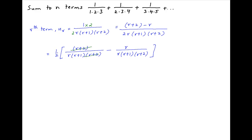r plus 2 cancels across the numerator and denominator in the first term, and r cancels in the second term. Therefore ur is equal to half of, in brackets, 1 upon r times r plus 1, minus 1 upon r plus 1 times r plus 2.